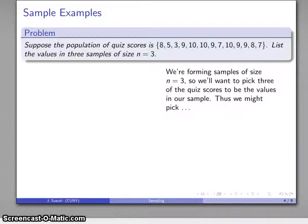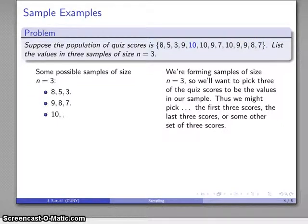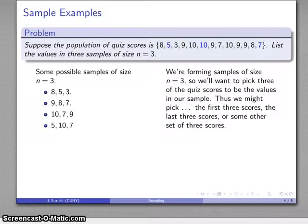We're forming samples of size n equals 3, so I want to pick three quiz scores to be the values in my sample. For example, I might pick the first three quiz scores: 8, 5, and 3 — there's one sample. Maybe I'll take the last three quiz scores: 9, 8, and 7. Maybe I'll take a couple of random scores from the middle: 10, 7, 9. Or maybe a different set: 5, 10, 7, and so on. The idea is that I form these different samples of size n equals 3 by taking n equals 3 of the quiz scores.